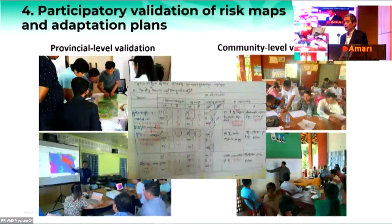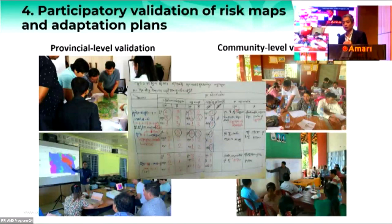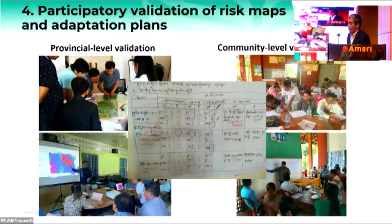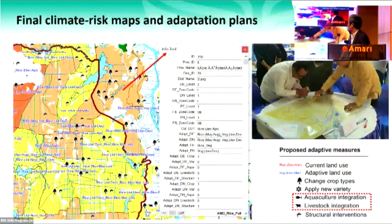We then bring the output from district and province discussions to the community in four provinces, working with farmers to verify whether the suggested adaptations work in the local context. Farmers — including both men and women — review the adaptation method suggestions and indicate what is applicable in their area and what effect it has on men's and women's workload.